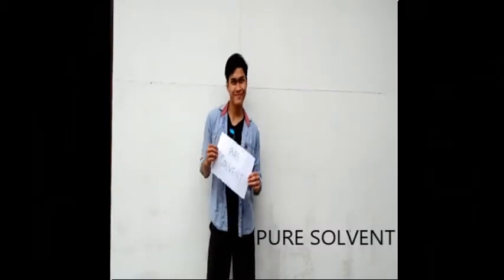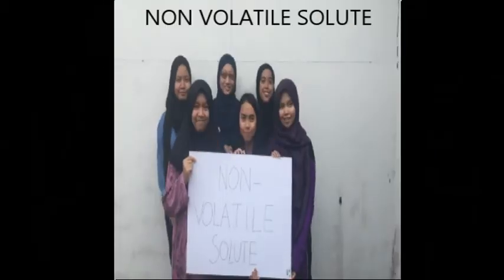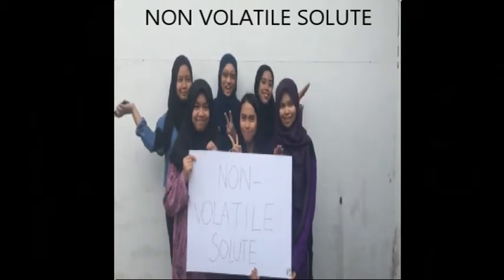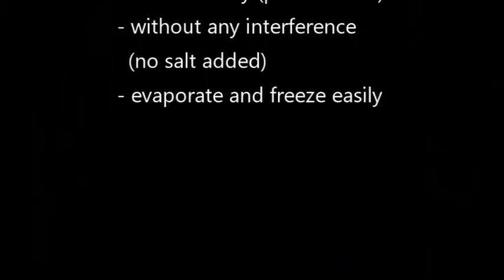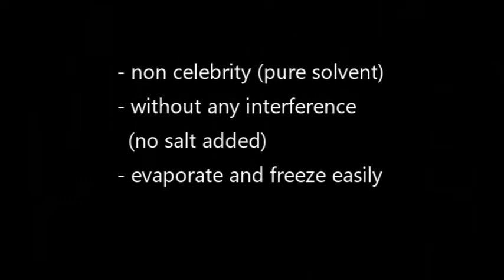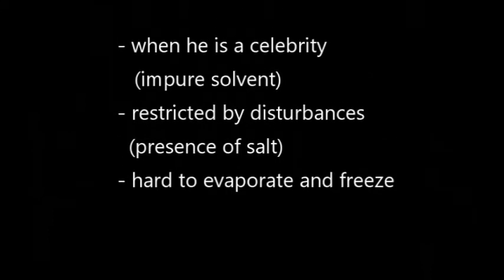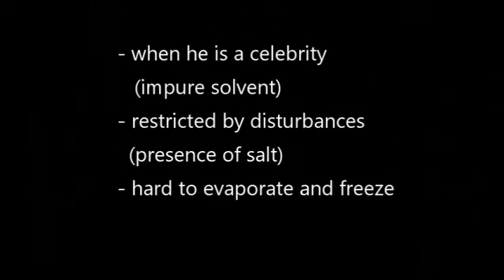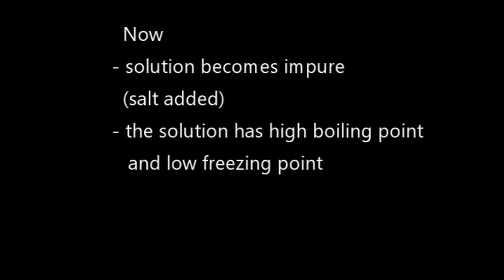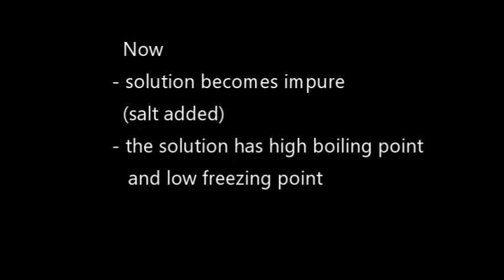From the scene above, we can relate it to two colligative properties: boiling point elevation and freezing point lowering. When Jonathan was a non-celebrity, he represents pure solvent without any volatile solute — he was free to go wherever he liked without interference. This shows that pure solvent can evaporate easily and freeze easily. After he became famous, his actions were restricted by fangirls, reporters, and paparazzi. These disturbances represent the non-volatile solute added to the pure solvent. Now the solvent has become impure, giving it a higher boiling point and lower freezing point — it is harder to evaporate and harder to freeze.